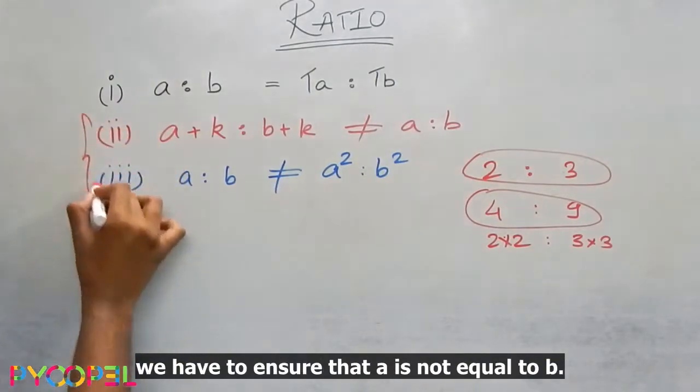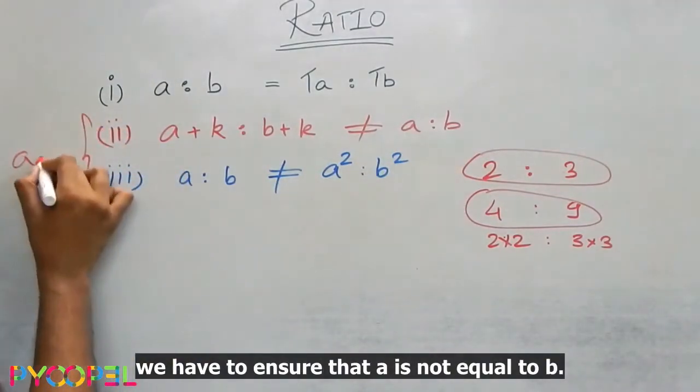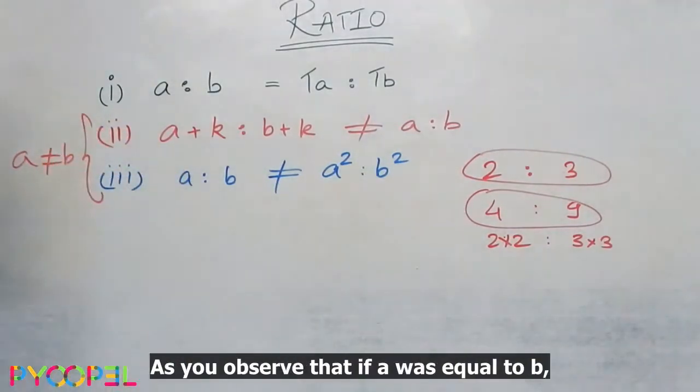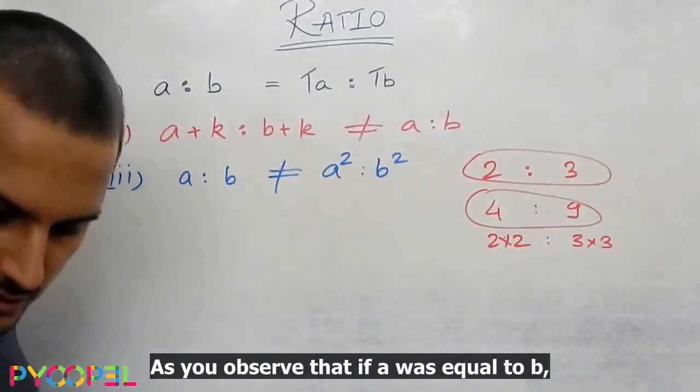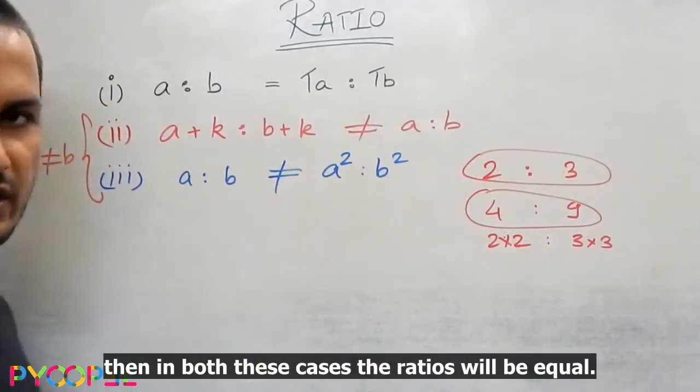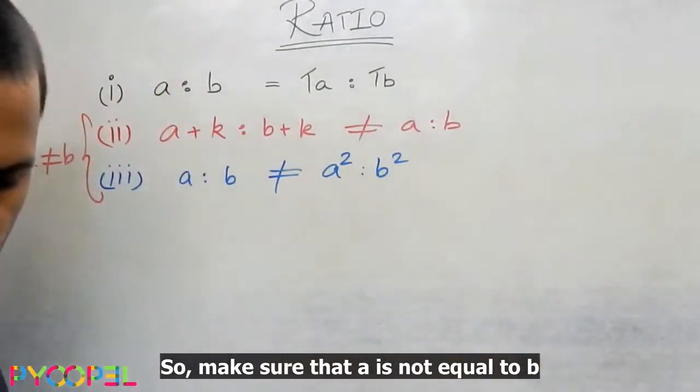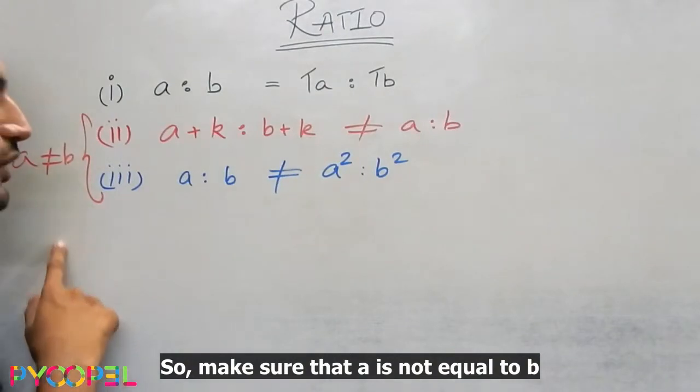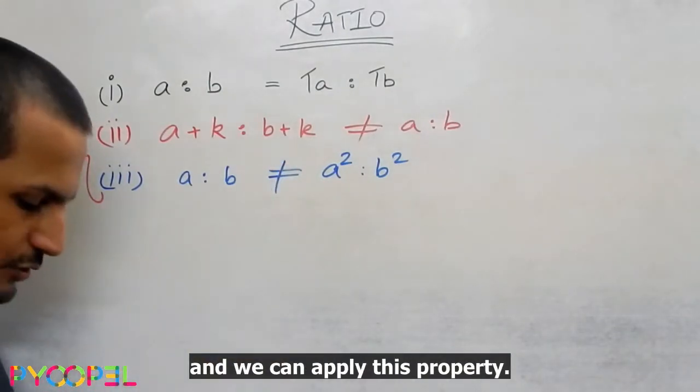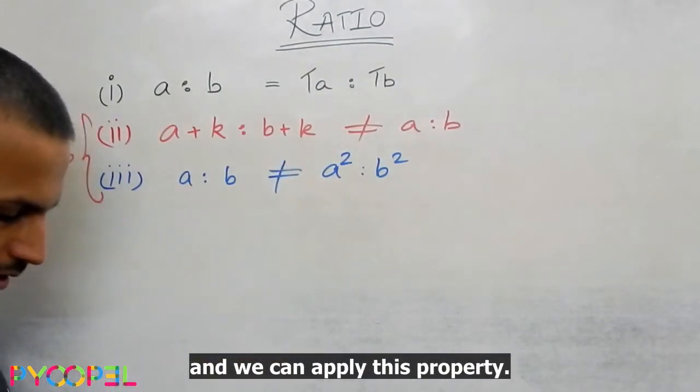In both these cases, we have to ensure that A is not equal to B. As you will observe that if A was equal to B, then in both these cases the ratios will be equal. So make sure that A is not equal to B and we can apply this property.